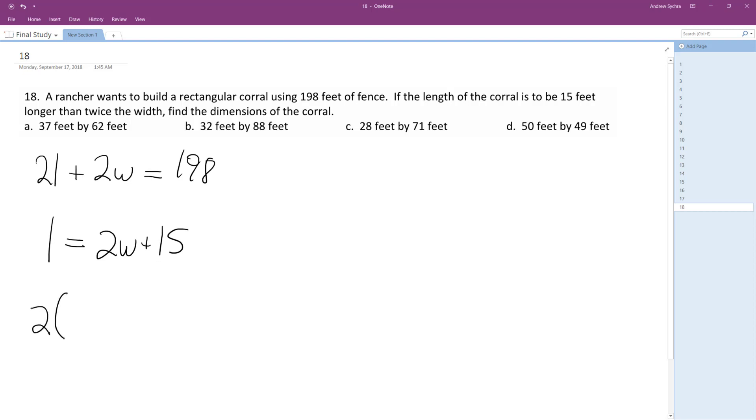So 2L, but instead of L, we'll have 2W plus 15 plus 2W is equal to 198. So we get 4W plus 30 plus 2W is equal to 198.